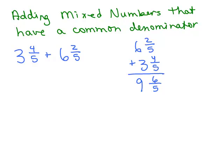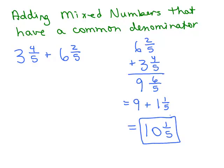Now the problem is I have a mixed number and an improper fraction. We don't want to leave our answer that way — it's not in simplified form. So remember, this means 9 plus 6 fifths. 6 fifths as a mixed number is 6 divided by 5, which is 1 and 1 fifth. So we change that improper fraction to a mixed number, add the 9 and 1 together, and that gives us 10 and 1 fifth. That's the natural way to do it when you start out with two mixed numbers.